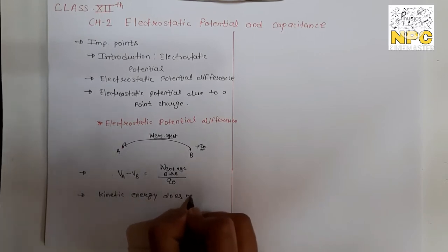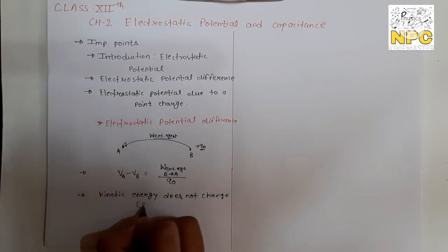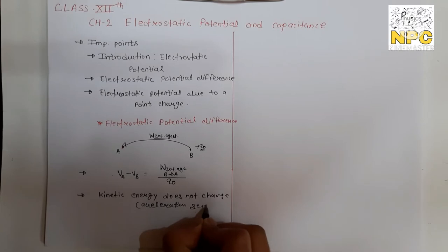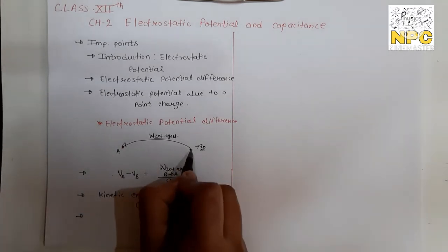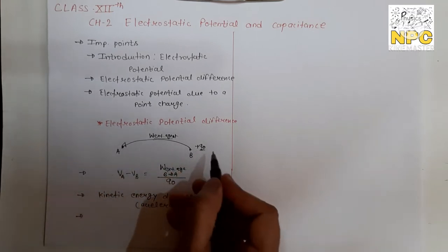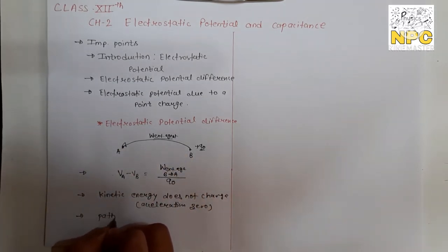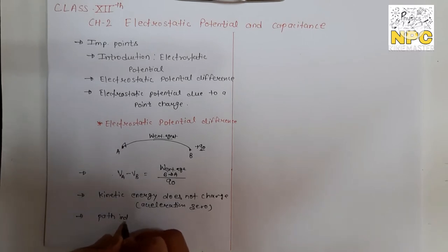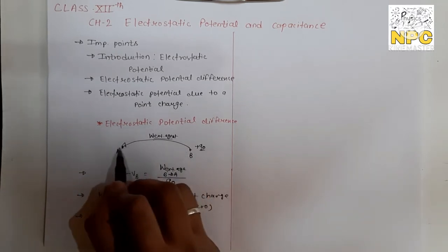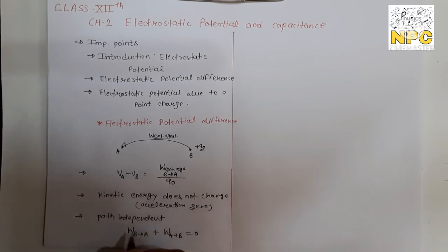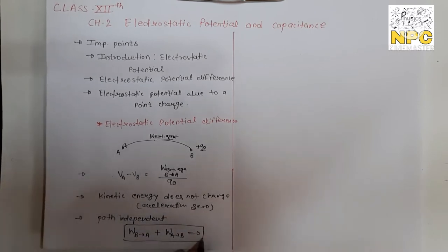Kinetic energy does not change means acceleration is zero. Second important point: you can take Q₀ from point B to point A by any path, in any way. This means the work done and the potential are path independent. Why path independent? Because the work done from B to A and work done from A to B, when added together, gives total work done for a round trip.